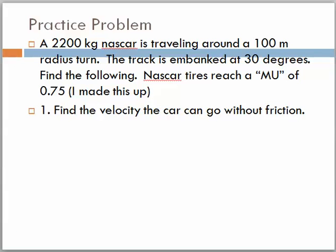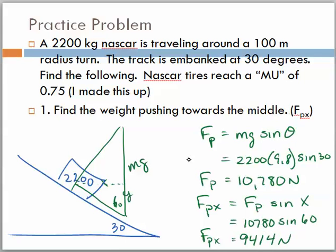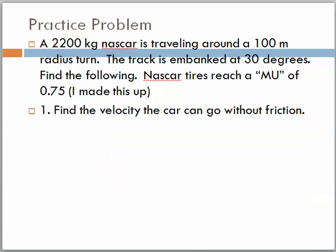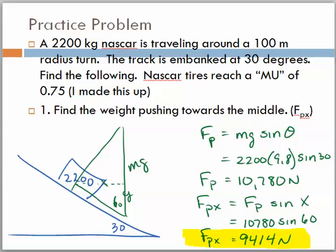Find the velocity the car can go without friction. Without friction would simply be using how much force is pulling it in the x direction, which is what we calculated earlier. That's going to be Fp of x. In this case, I can say that's just by the centripetal force. All we have to do is, Fp of x will allow me to go mv squared over r. Fp of x, in this case, as we said, I've got to rewind myself again here, is 9414.